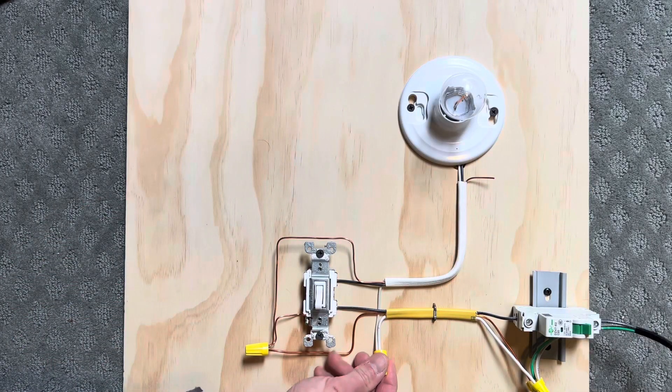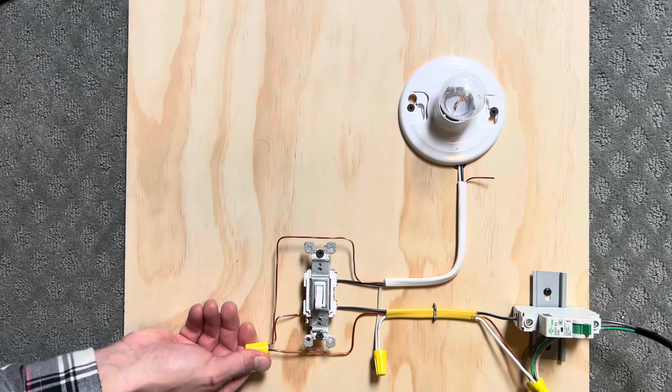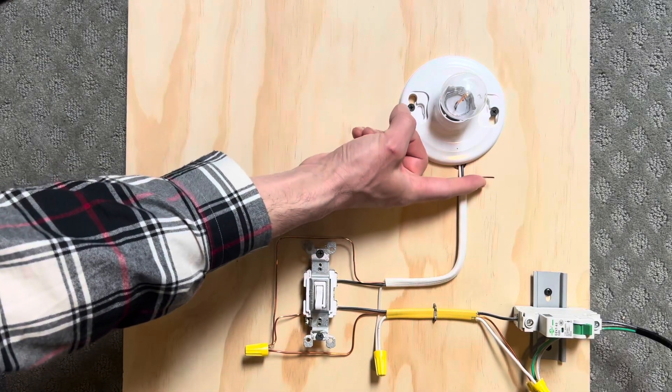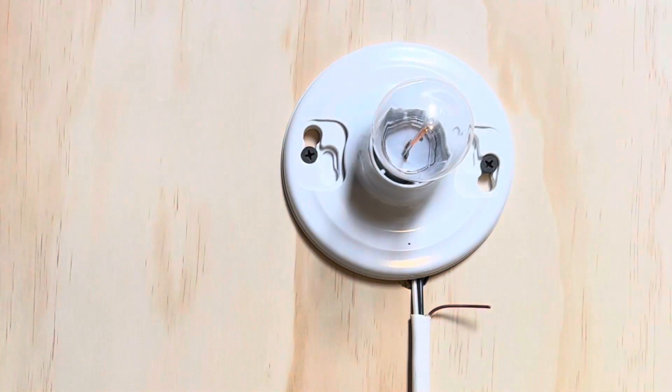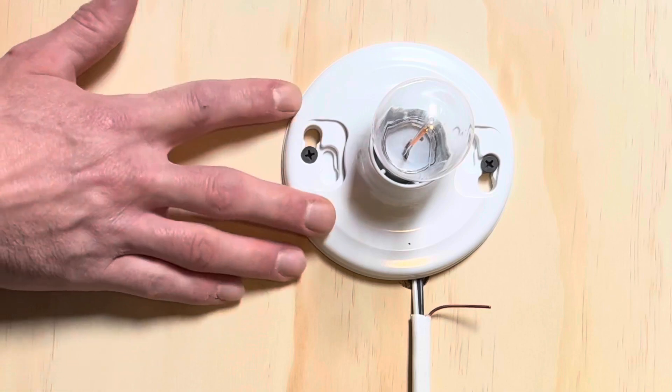Everything is commoned up. Your neutrals are commoned up inside your box, and your grounds are commoned up inside your box. Up here at the light, you can see the ground just kind of hanging there, and that's totally fine. This fixture does not have a ground screw on it, so you don't have to hook up a ground.